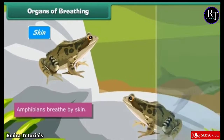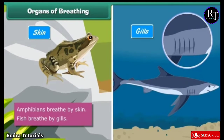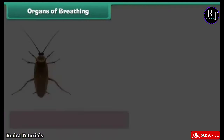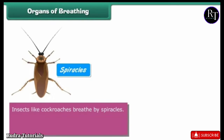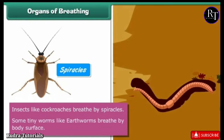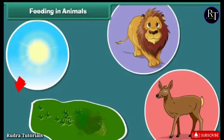Fish breathe by gills. Insects like cockroaches breathe by spiracles. Some tiny worms like earthworms breathe by body surface.